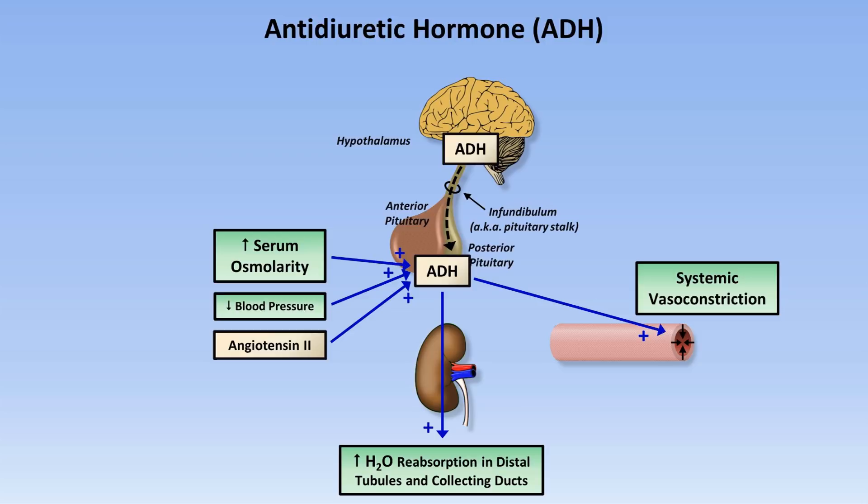This diagram shows the site of production and sites of action of ADH. It's produced in the hypothalamus and travels to the posterior pituitary through the pituitary stalk. It's then released into the circulation in response to high serum osmolarity, low blood pressure, or angiotensin II. Once released, it stimulates reabsorption of water in the kidneys and stimulates vasoconstriction in the blood vessels, both working together to increase blood pressure.